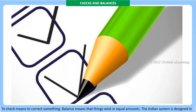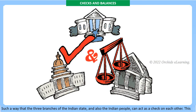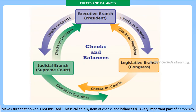The judiciary also uses the laws to decide any disputes that are taken to them for settling. Checks and Balances: to 'check' means to correct something; 'balance' means that things exist in equal amounts. The Indian system is designed in such a way that the three branches of the Indian state and also the Indian people can act as a check on each other, making sure that power is not misused. This is called a system of checks and balances.